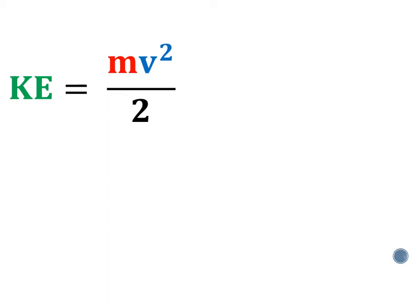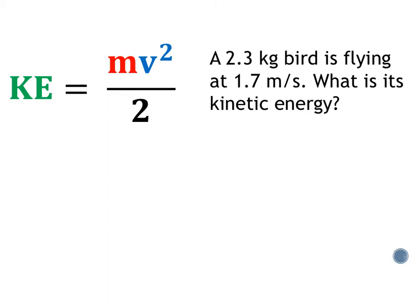A 2.3 kilogram bird is flying at 1.7 meters per second. What is its kinetic energy? Really simple, two variables to work with here.